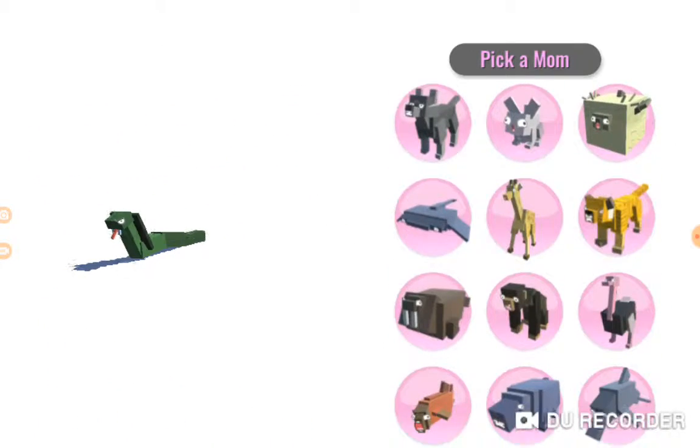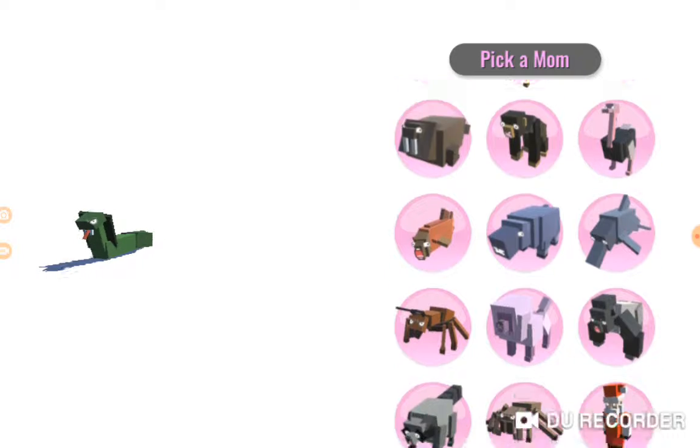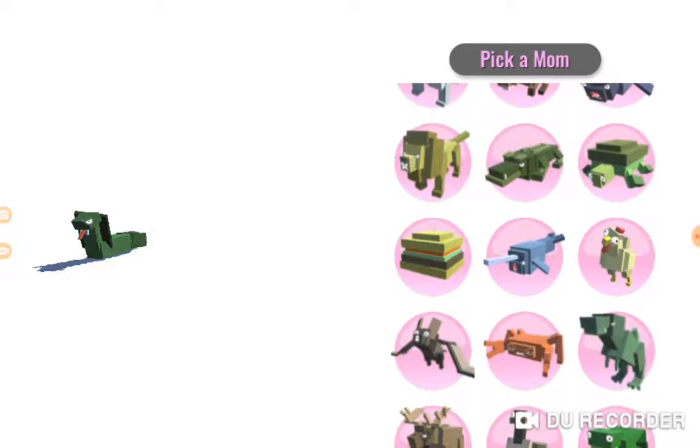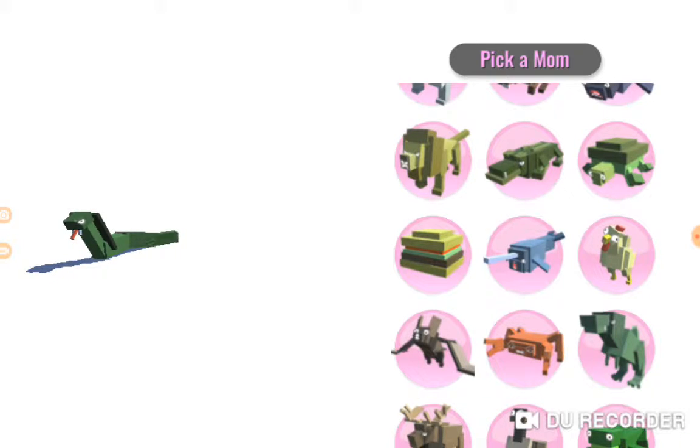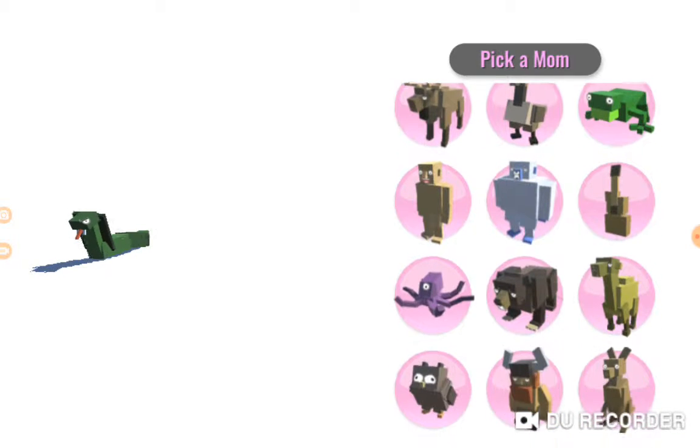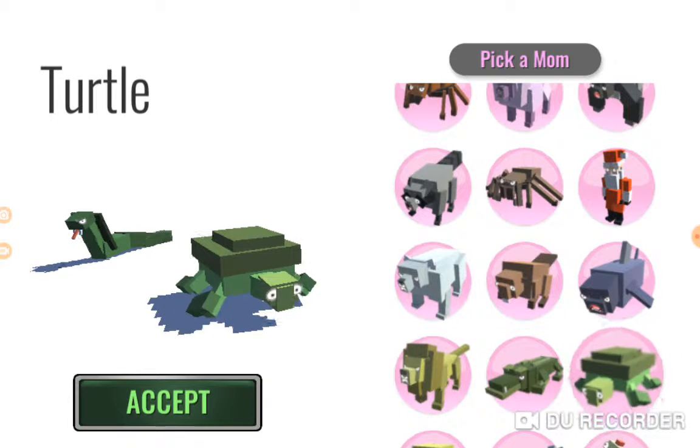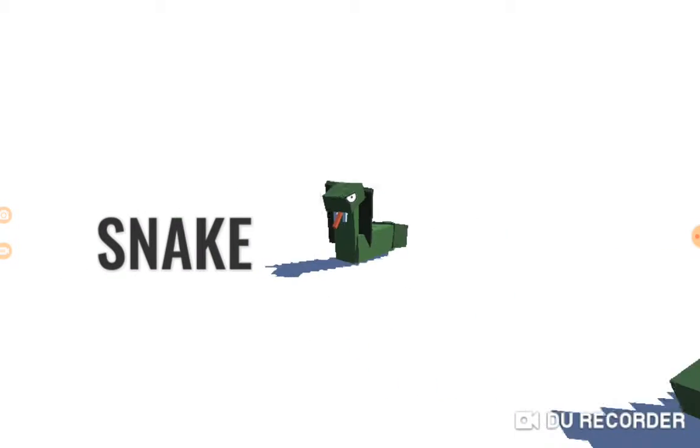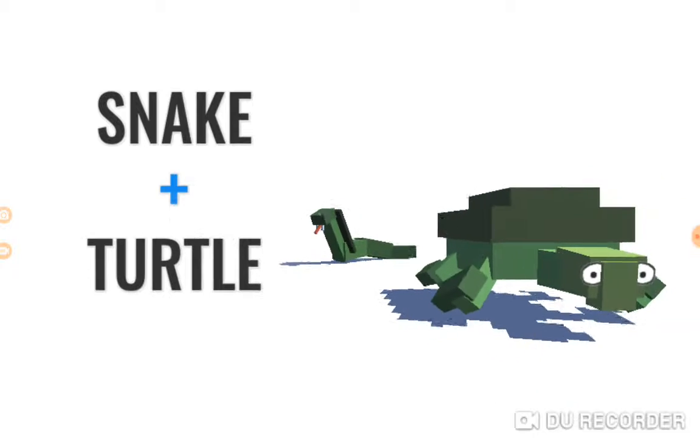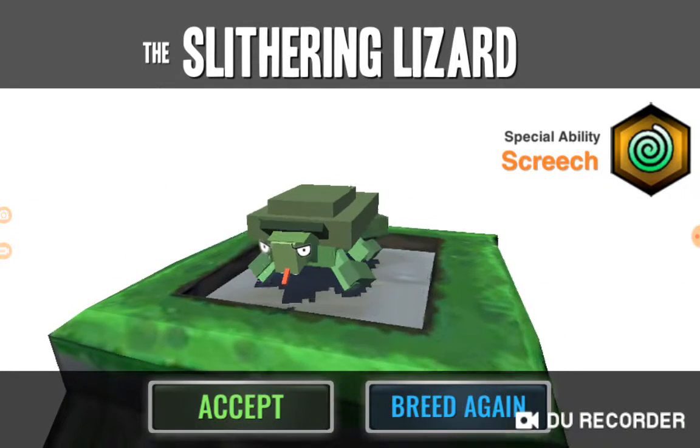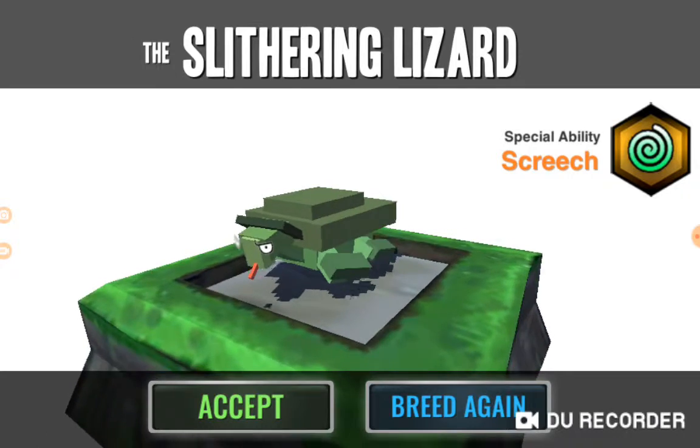We have to do a snake because we haven't done him. Let's see what else we haven't done. We have definitely not done a turtle. Let's hope we have a slovering lizard. Okay no.